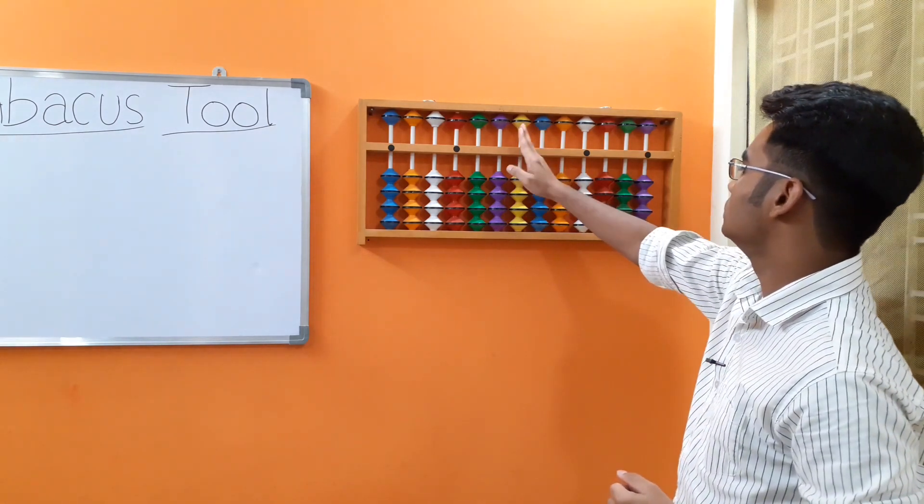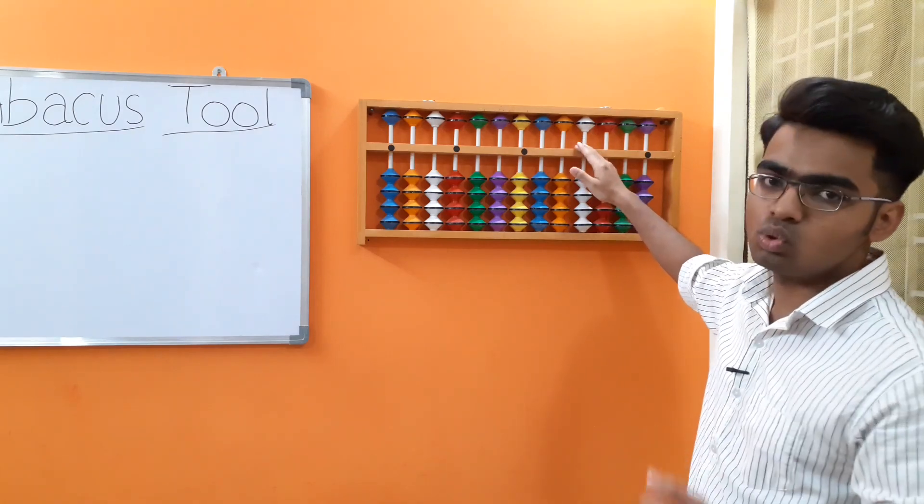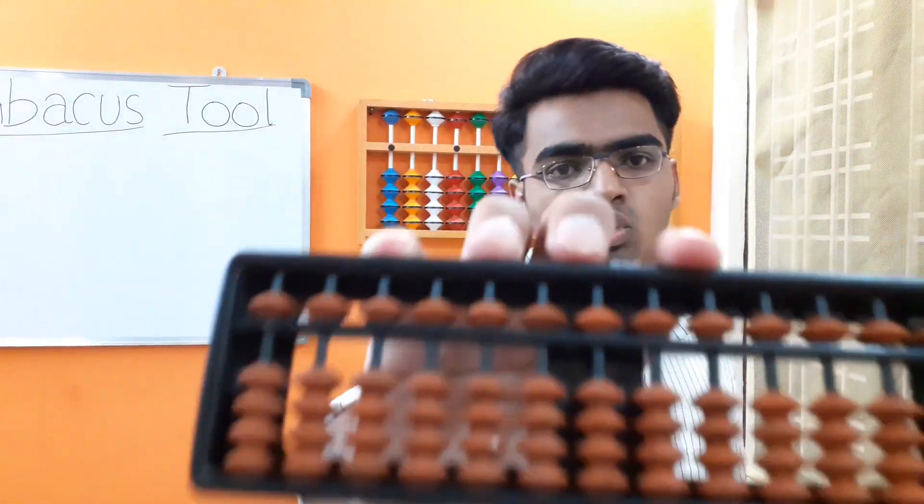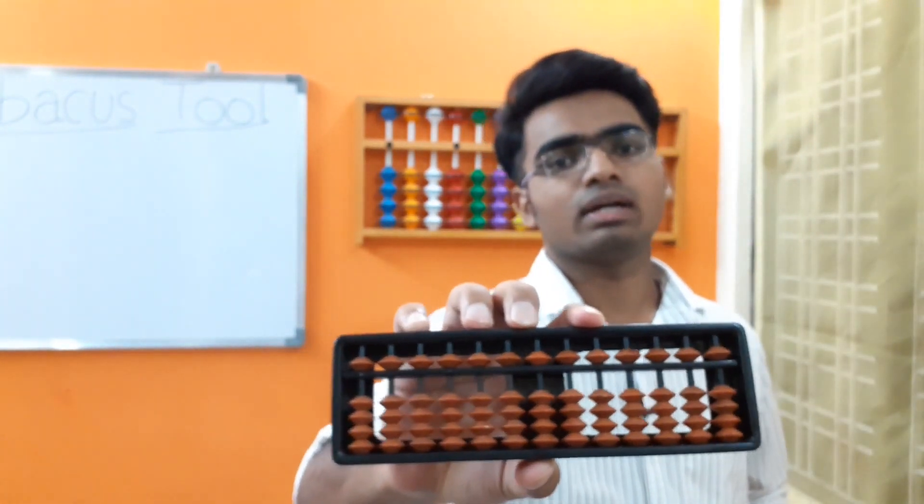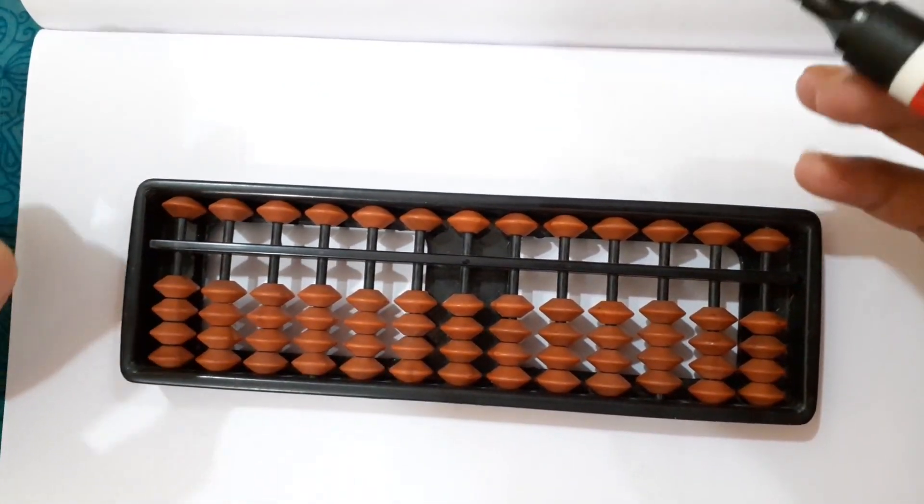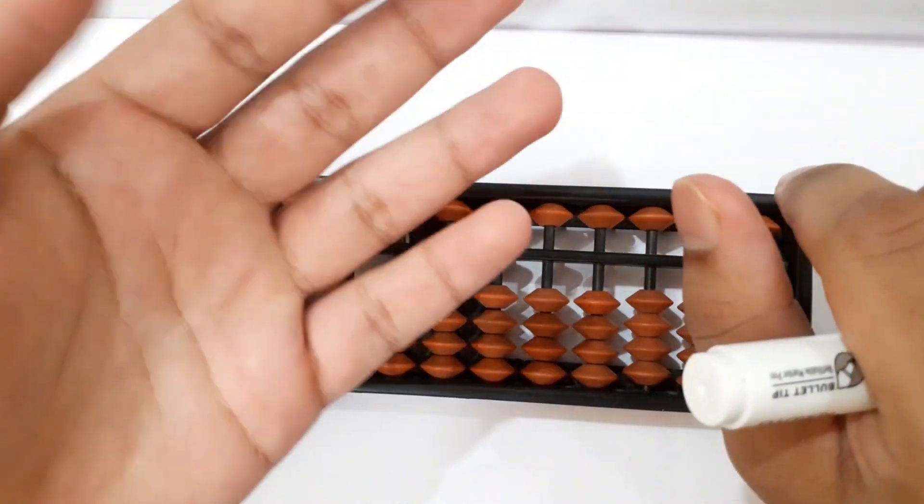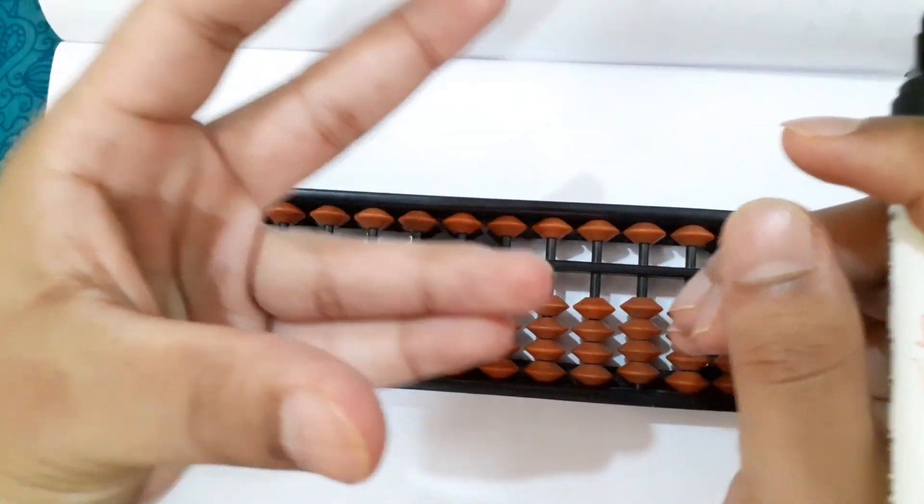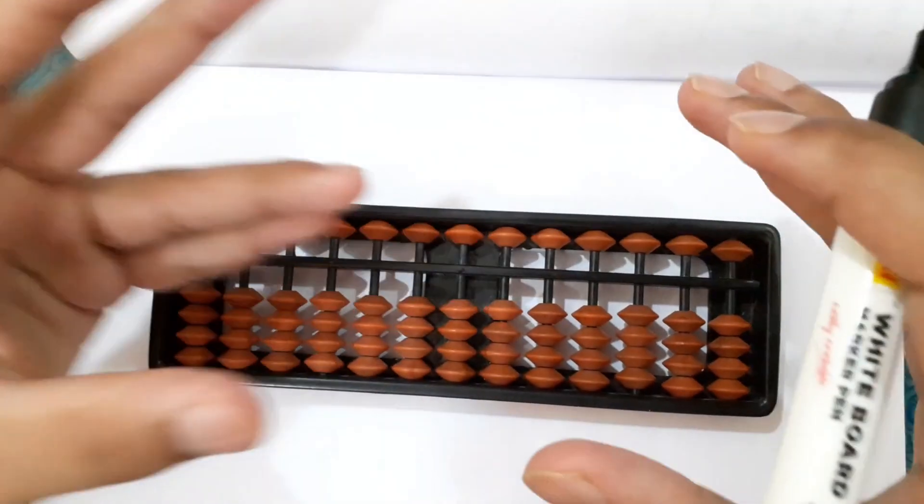Now let's see how to hold this Abacus in your hand while solving the sums. Let's change the camera angle. This is my left hand and this is my right hand. The left hand holds the Abacus like this, which is called the rabbit mouth.